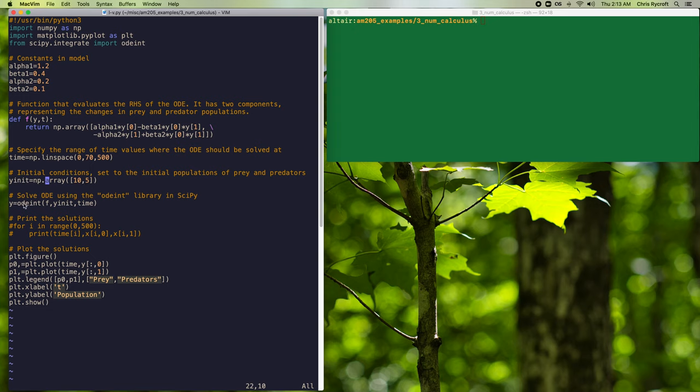We'll then define initial conditions for our prey and predator populations. And we'll then call the ODE int function. And this will take in three arguments. It will take in our right-hand side, F. It will take in our initial data, Y init. And it will also take in the time range that we want to solve over.